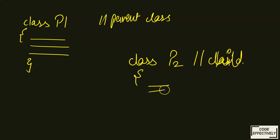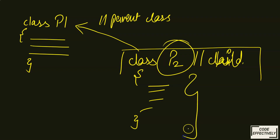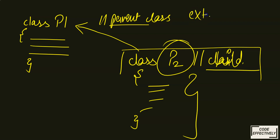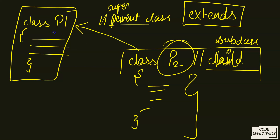After this, we make a child class — let's say P2. This child class wants all the methods of the P1 parent class as well as its own methods. To make the connection between the parent class and the child class, Java gives us the 'extends' keyword, which links these two classes in the form of parent and child — also called superclass and subclass.